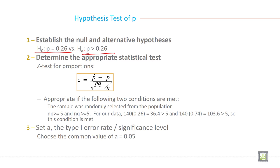Then the appropriate following two conditions are met: the sample was randomly selected from the population and np is greater than or equal to 5 and nq is greater than or equal to 5 for this data. The next is step 3, set the type 1 error or significance. It is already given in the previous slide that it will be 0.05.